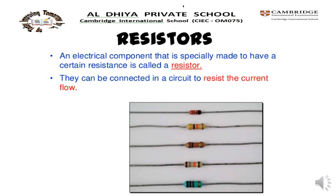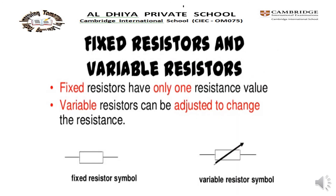What is the use of a resistor? It resists the current flow. There are fixed resistors and variable resistors. Fixed resistors have only one resistance value, but variable resistors can be adjusted to change the resistance. See the symbols — the fixed resistor symbol and the variable resistor symbol.